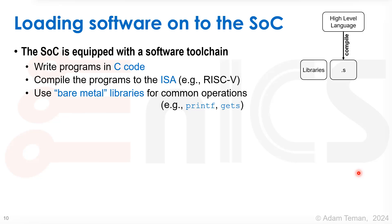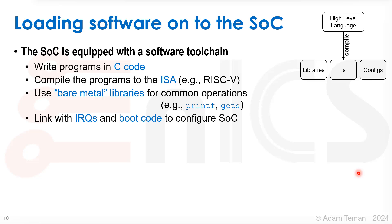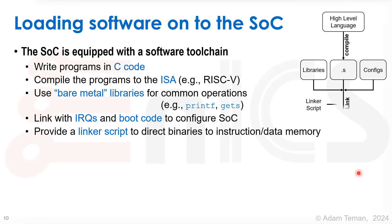We take bare metal libraries for common operations — things like printf or gets. Since we're not going to be using an operating system, we use what we call bare metal libraries. We also have configuration things like IRQs and boot code needed to configure the SoC. We provide a linker script that tells us where to direct the binaries to the instruction and data memory, and that gives us our executable binary.